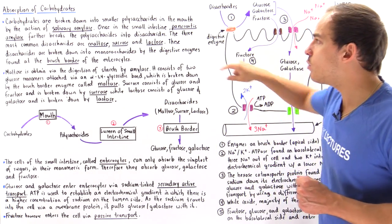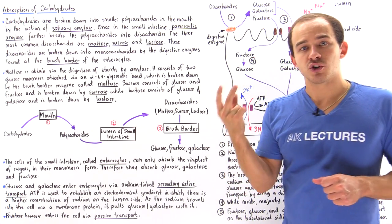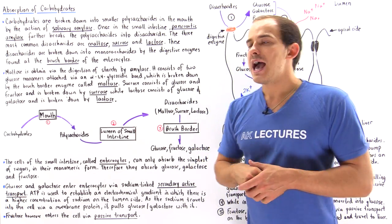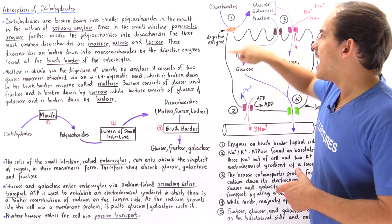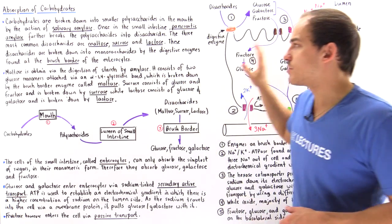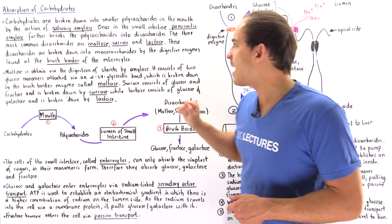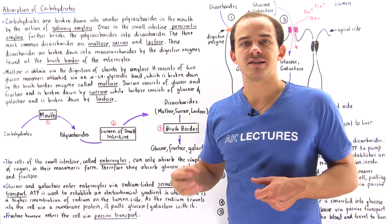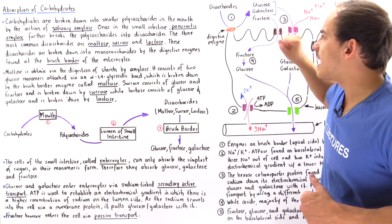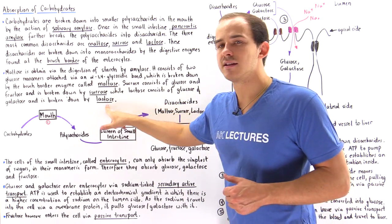For sucrose, sucrose consists of glucose and fructose attached via an alpha-glycosidic bond, and the digestive enzyme at the brush border that breaks down sucrose is known as sucrase. And finally, lactose consists of galactose and glucose, and the enzyme that breaks down lactose is known as lactase.